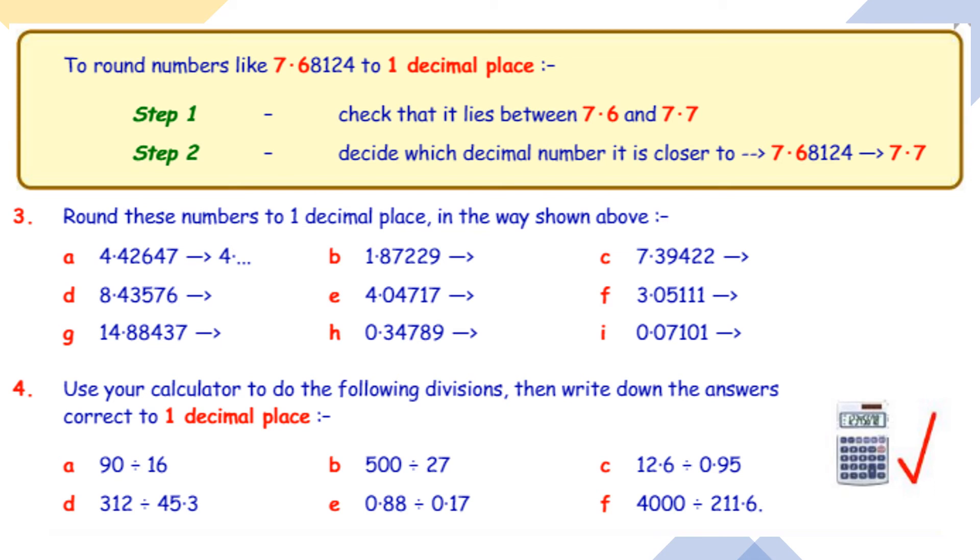Let's look at three a, 4.42647. The number that's important there is the two, because it's in the second decimal place, and the two means rounding down, so the answer is 4.4. And b, the number in the second decimal place is seven, that's the only number that matters. 1.87, we would round that to 1.90, so the answer would be 1.9.